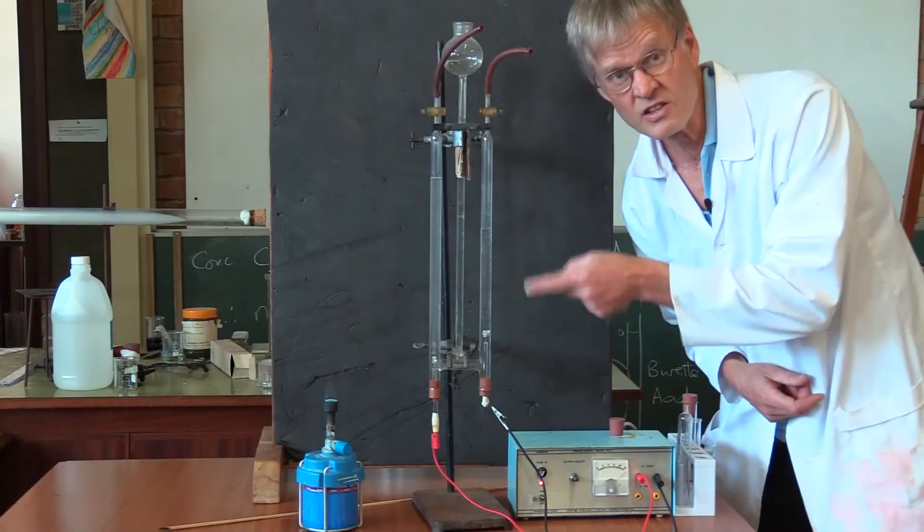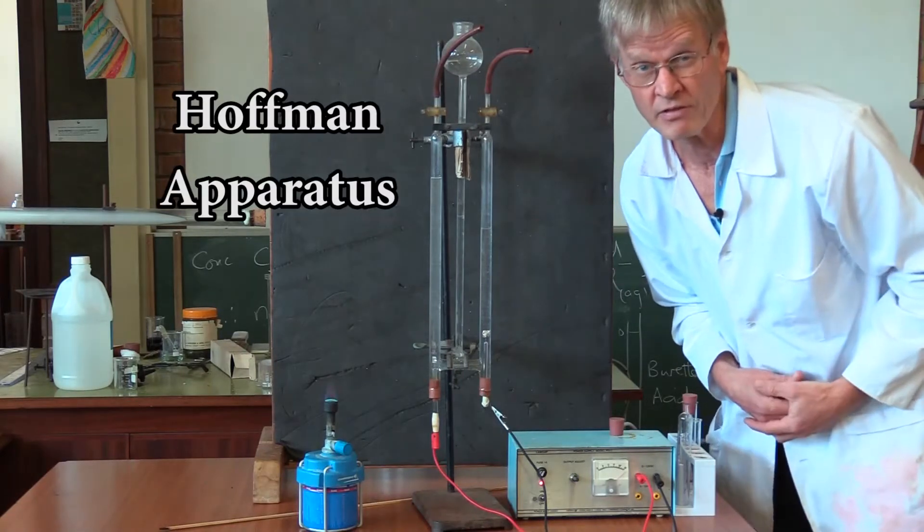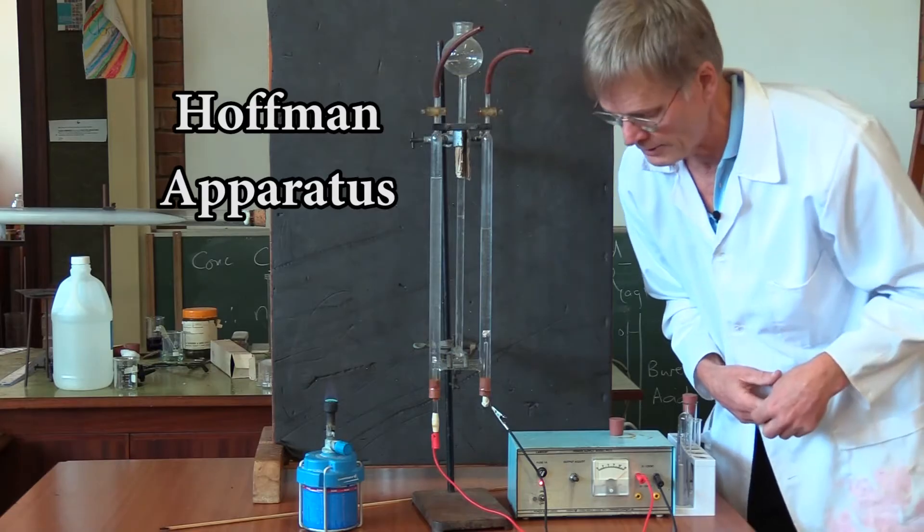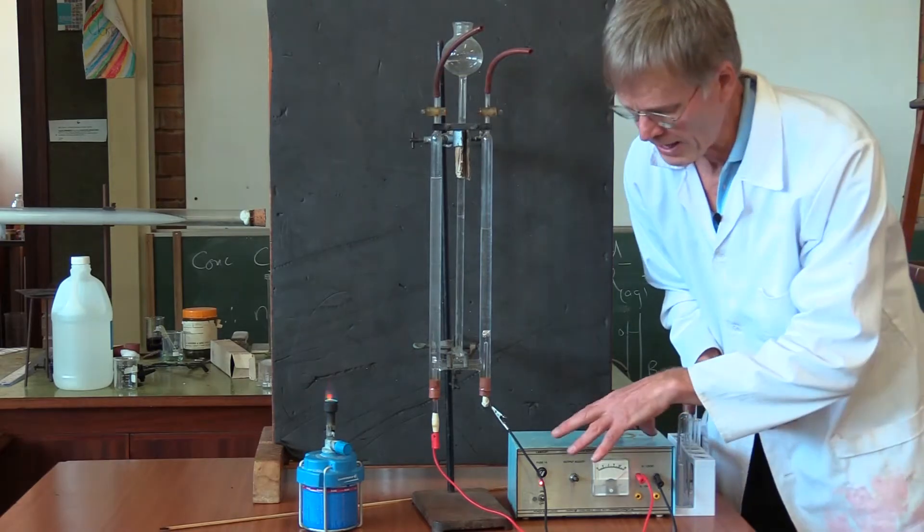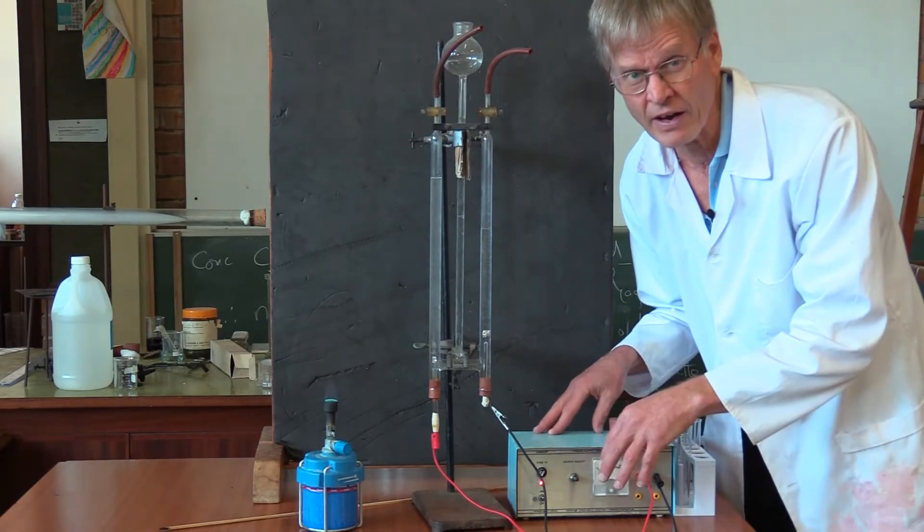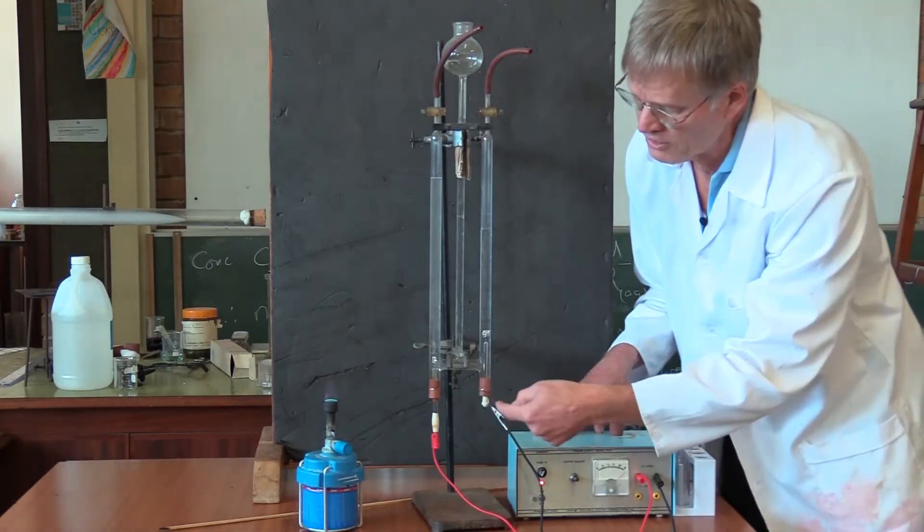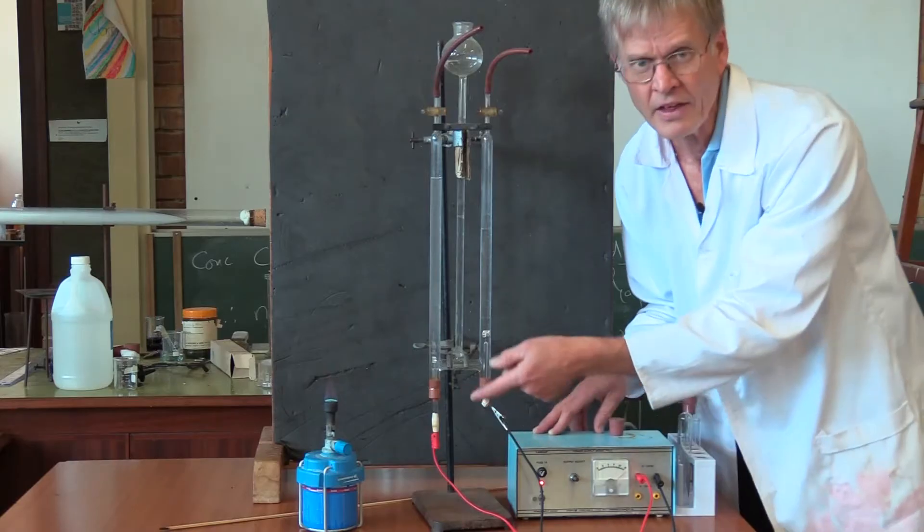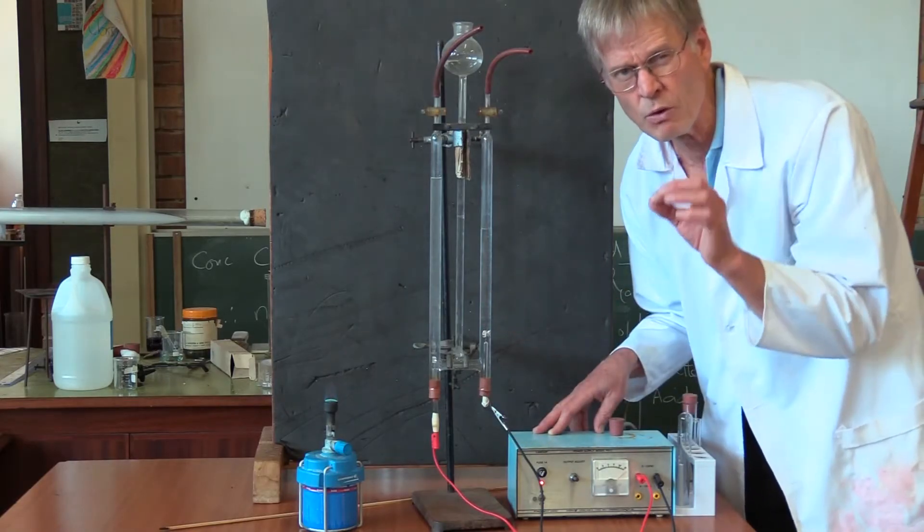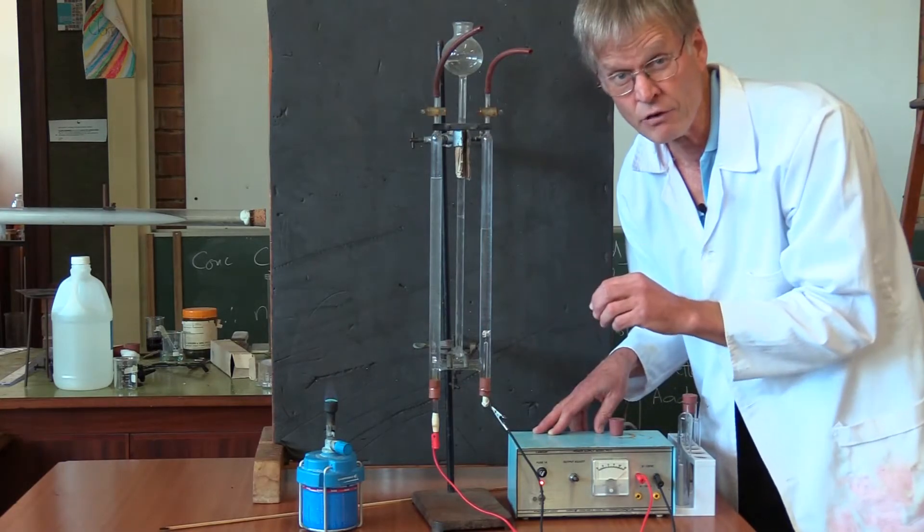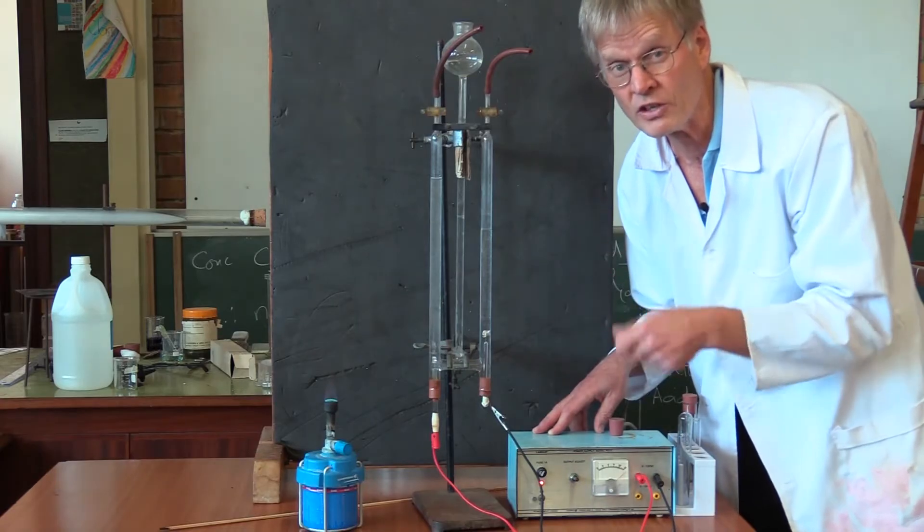Hi guys, this is a strange looking instrument called the Hoffman voltmeter. Let's just explain it. We have a source of electricity, direct current, and we've got positive and negative terminals attached to two terminals that are inside some water with a small drop of sulfuric acid just to allow it to conduct electricity.